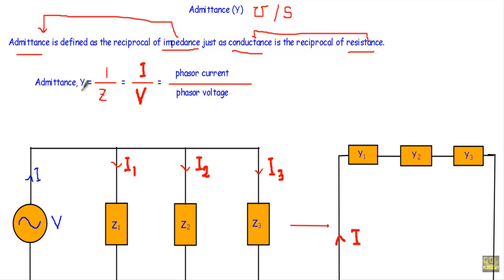Admittance Y equals 1 divided by Z, the reciprocal of impedance. Since impedance equals the ratio of phasor voltage to phasor current, 1 divided by Z gives the ratio of phasor current to phasor voltage. So admittance Y equals phasor current I divided by phasor voltage V.